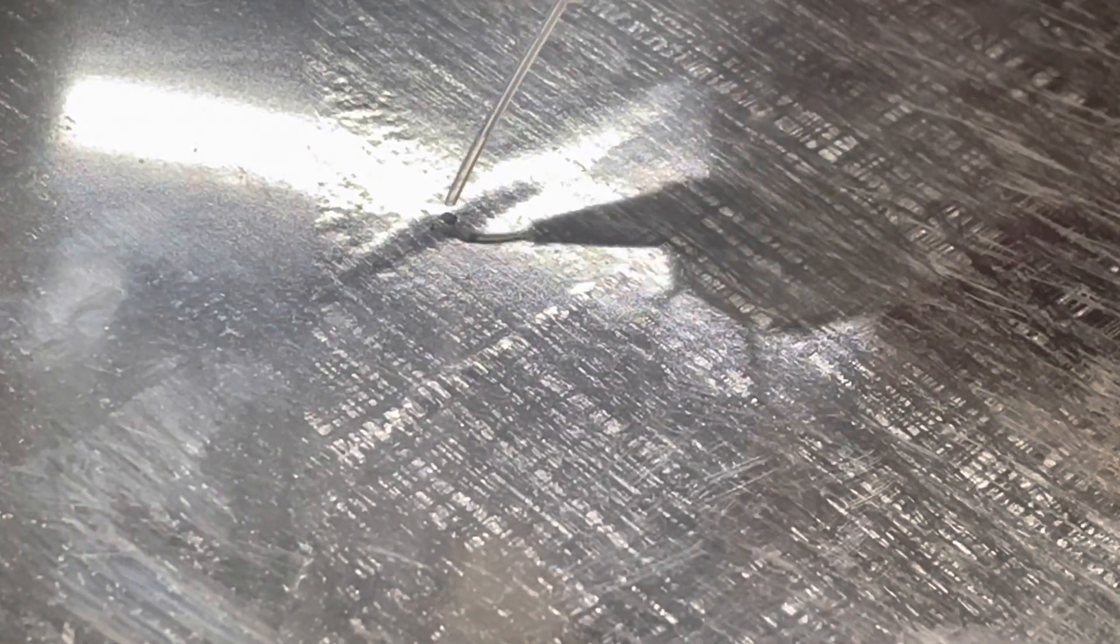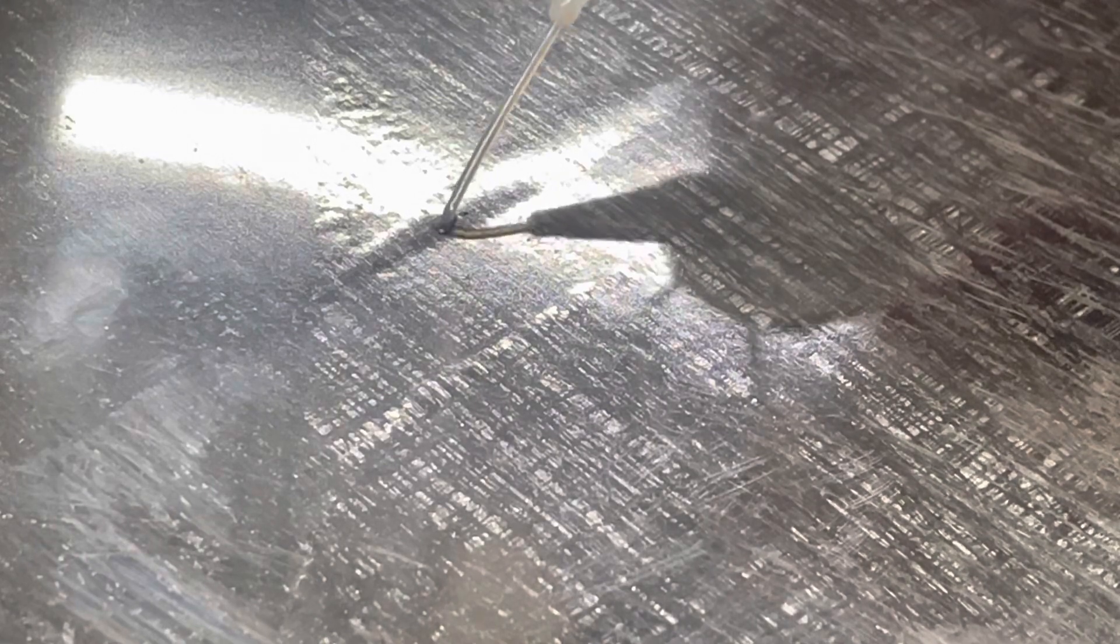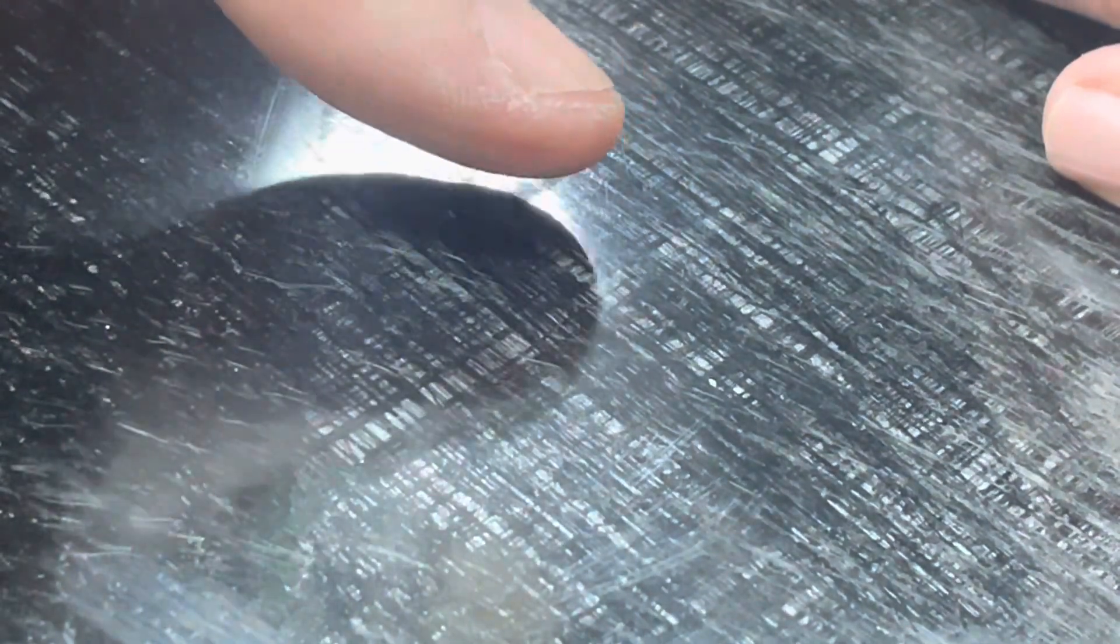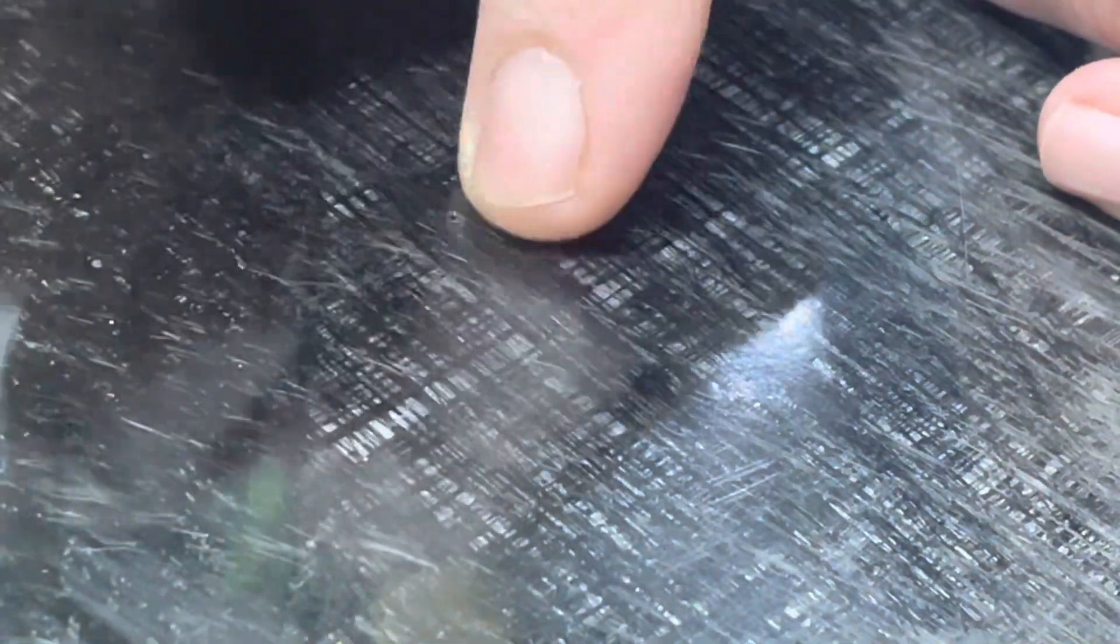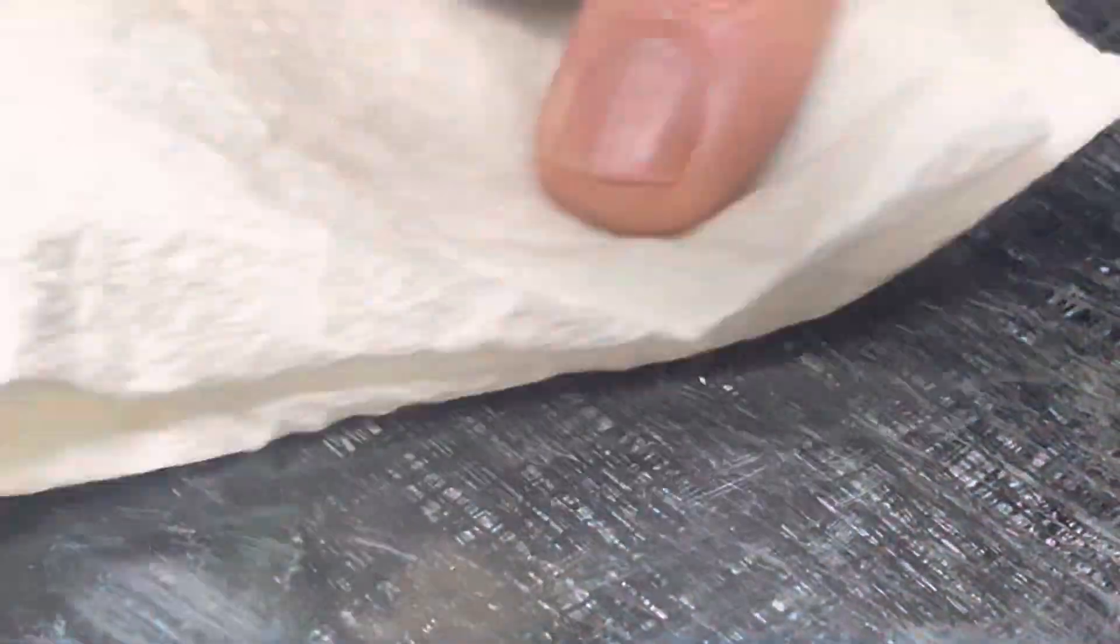Put a drop of CA there. Hold it a bit longer so it's got some time for the CA to wick through, and I can see it working through the skin there. Get some acetone ready on paper towel. I'm just going to push with my thumb, just push the CA up and down the groove, and wipe it over with the acetone.